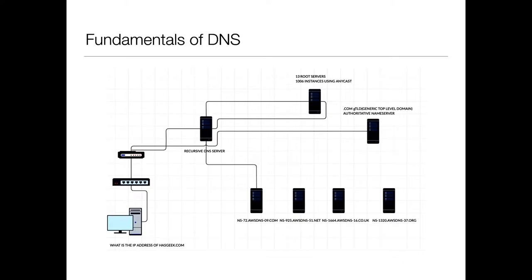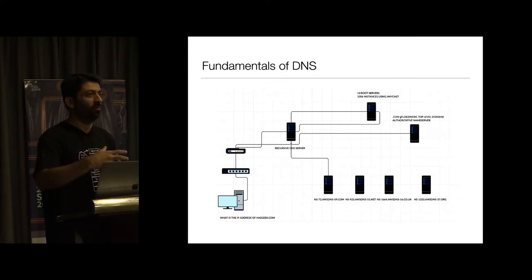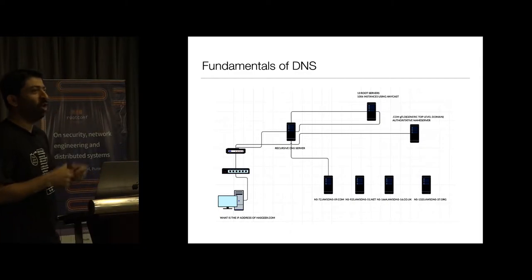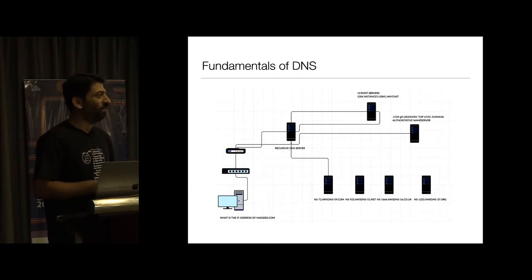Before going into the solution, let me give a small primer on DNS. A computer on the left of the slide is accessing a web resource. The request is for an IP address — a resolution from the name to an IP — done by something called a recursive DNS resolver. Generically this is the job of an ISP: when you connect to an internet connection the ISP gives you a DNS server IP which does the recursion to get the IP for the resource.